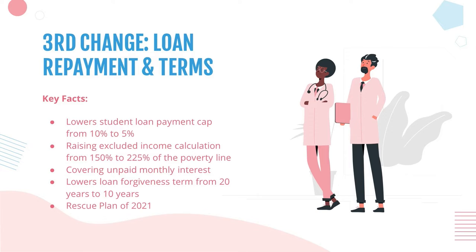They are proposing to lower the student loan payment cap from 10% of your income down to 5%. They're also proposing to raise the excluded income calculation from 150% over the poverty line to 225% over the poverty line — so more of your income is excluded, meaning lower student loan payments. On top of that, because your payment is based on income and not necessarily your loan amount, a lot of folks have run into issues where their loan balance is increasing because they're not even covering their interest. But the government says: as long as you're making your monthly payment, they'll cover any unpaid monthly interest. So that would be a huge deal if it goes through.